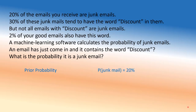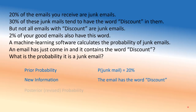We have the prior probability here, which is 20 percent — meaning junk mail is 20 percent in general. Now we get new information: this email has the word 'discount' in it. The probability of it being junk has gone up from 20 percent to much more. We're going to find out exactly how much using Bayes' theorem — junk mail given discount — and we'll solve it in two minutes without formulas.